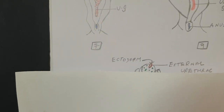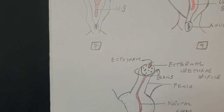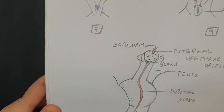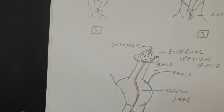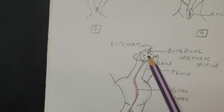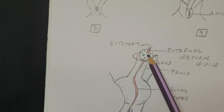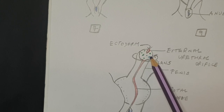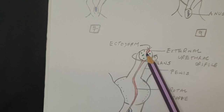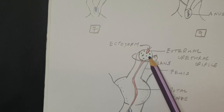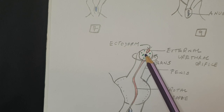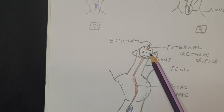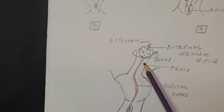At around 12 weeks there are two ectodermal invaginations that occur. The first occurs in the region of the glans and helps form the glandular epithelial plate, which is continuous with the urethra in the body. The second invagination is circumferential in form and helps form the prepuce, which then separates from the glans.